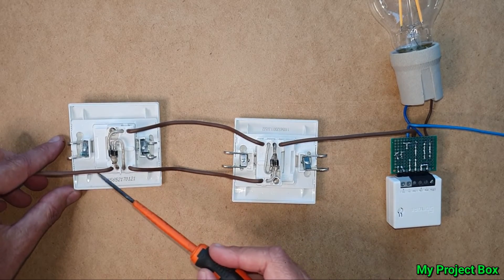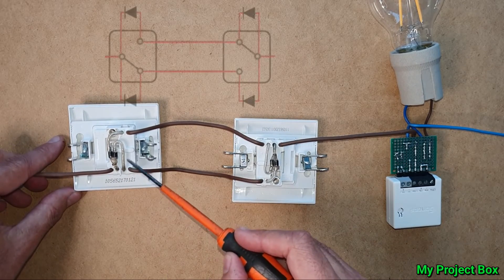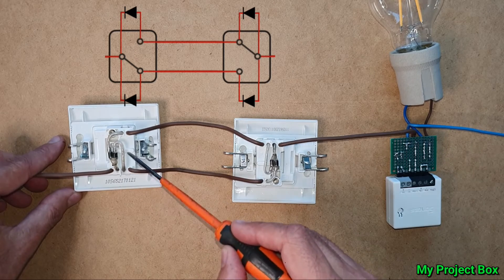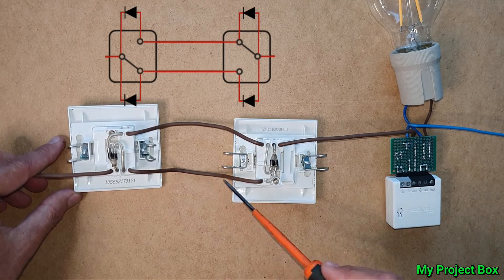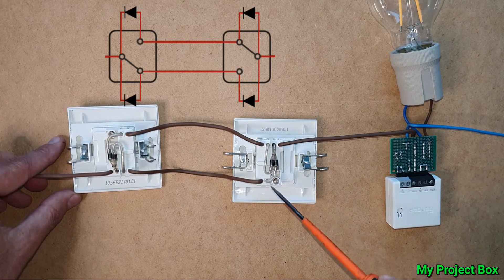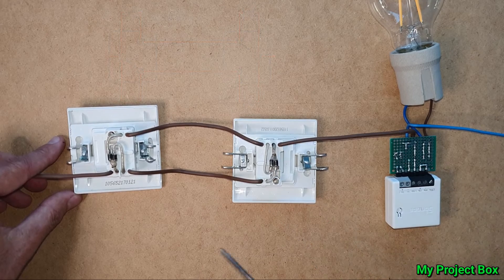As you can see you've got the live coming in and then you have this toggle switch with the diodes across each contact and then you have the strappers going across and the diodes across the two contacts of the changeover contacts of the toggle switch.